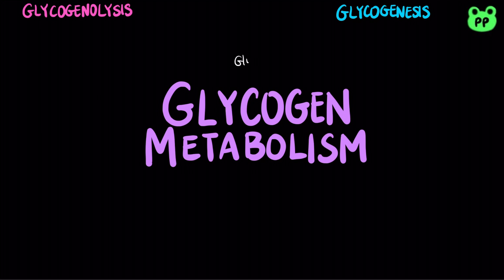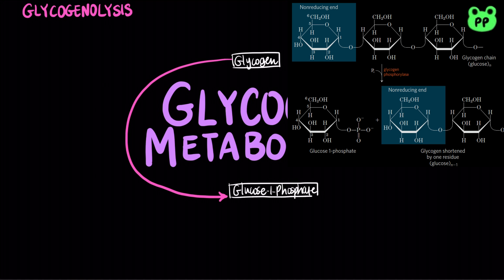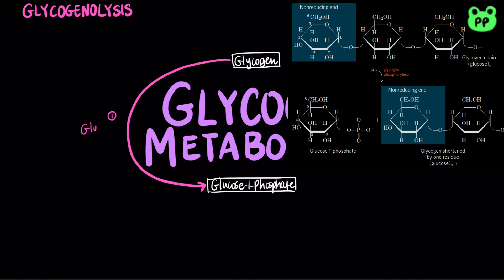The conversion of glycogen to glucose involves three steps. First, glycogen phosphorylase removes a glucose residue from the non-reducing end of a glycogen chain through a phosphorylase reaction, which preserves some energy of the glycosidic bond in the formation of glucose-1-phosphate. The phosphorylase reaction also requires an essential cofactor called pyridoxal phosphate, or PLP, which acts as a general acid catalyst.